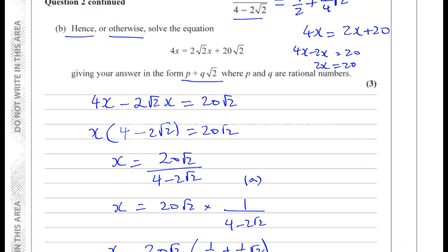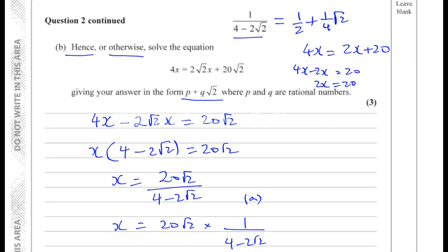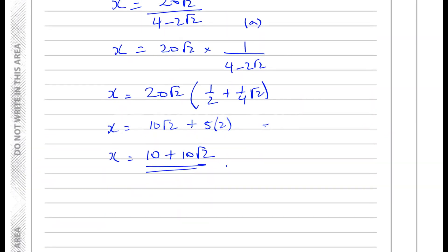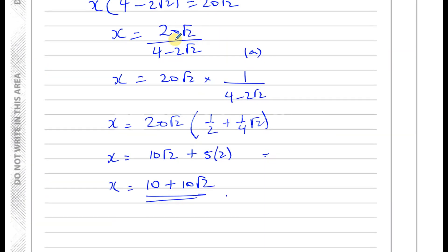Okay, so it's using what we did in the first part to solve this problem. You notice at this stage here, this is where part A comes into it, because 1 over 4 minus 2√2 is the same as what A was, and that's simplified to this. So going straight from this step to that step is perfectly fine, because this is what we showed in part A already.